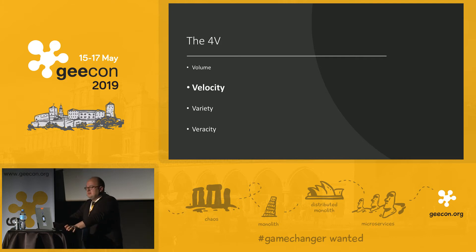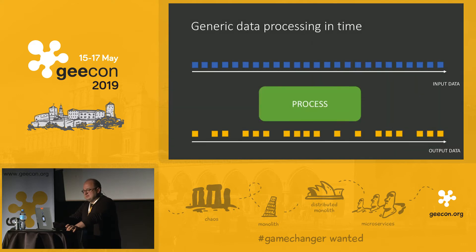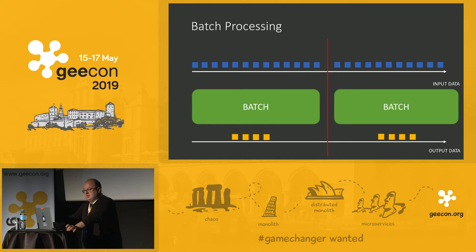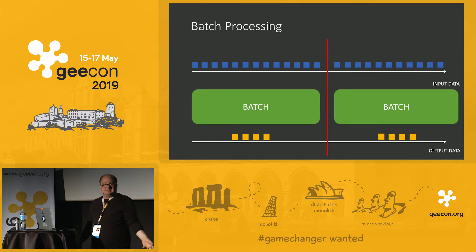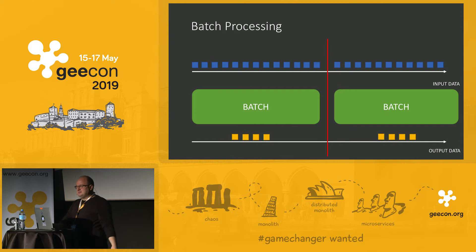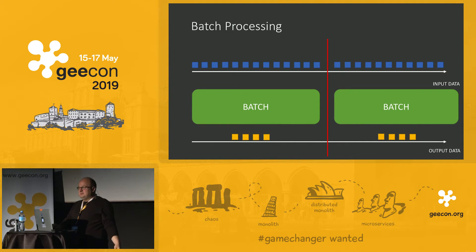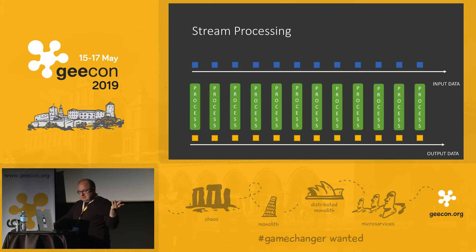Every data-driven system can be shown as having a progression of inputs, doing processing, and producing outputs. In batch, you wait a long time and process huge quantities at once. A good example: the European Banking Authority requires banks to submit huge metrics about their financial condition every three months, so banks run systems that process like a hundred terabytes of data and produce output once every three months.